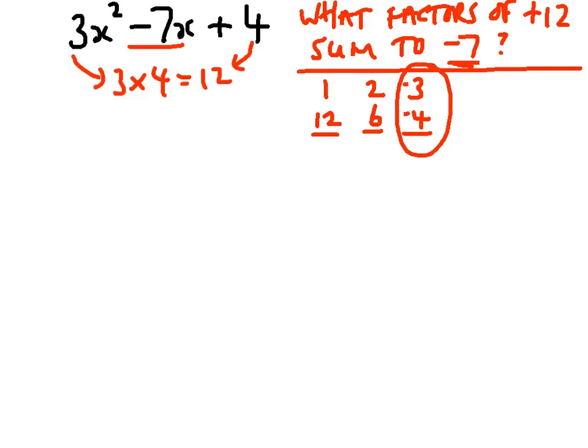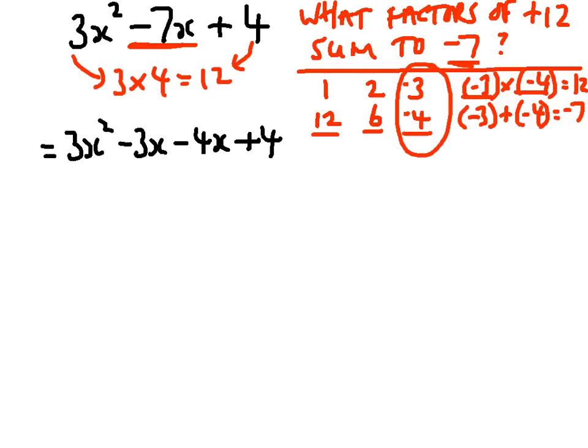So actually, the factors are going to be minus 3 and minus 4, because minus 3 times minus 4 is equal to 12, and minus 3 plus minus 4, so add negative 4, is minus 7. So there we go. Just to summarize those. So instead of writing minus 7x, we're going to write minus 3x minus another 4x.